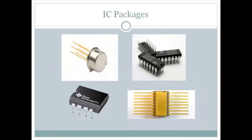Here are some types of packages. The first is the Metal Can IC. Next is the 14-pin plastic dual inline IC. This has 4 pins on one side and 4 pins on the opposite side — so 8 pins total for the dual inline IC. Then there is the ceramic flat package.